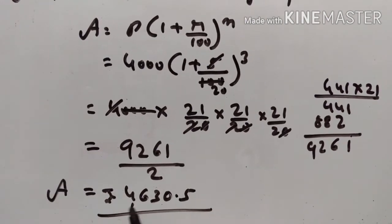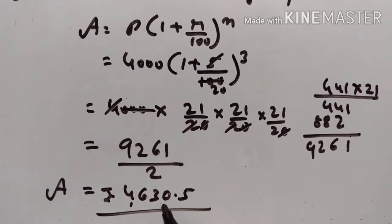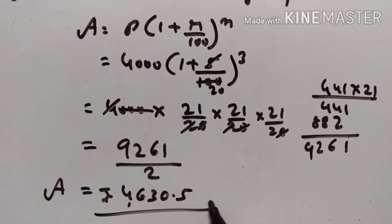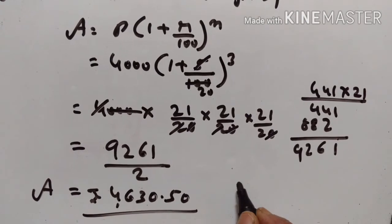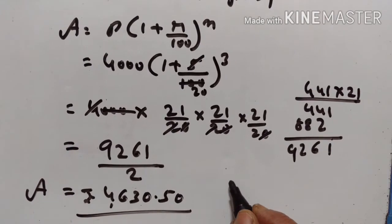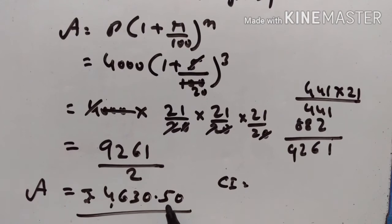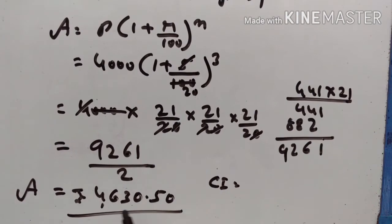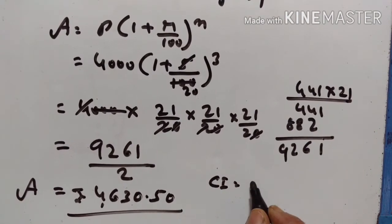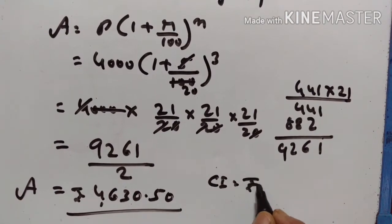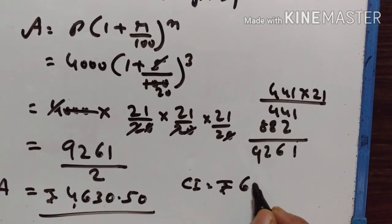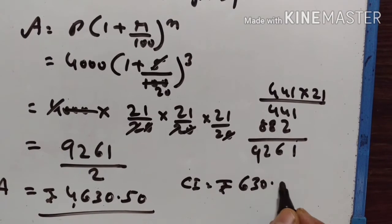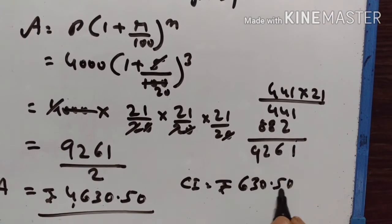Amount is equal to rupees 4630.50. Compound interest is equal to amount minus principal. Principal is equal to 4000. So, compound interest is equal to rupees 630.50.